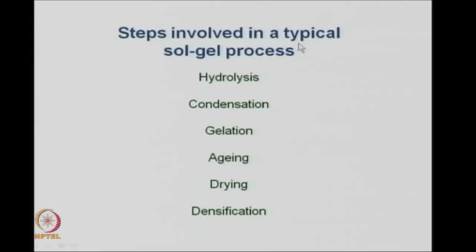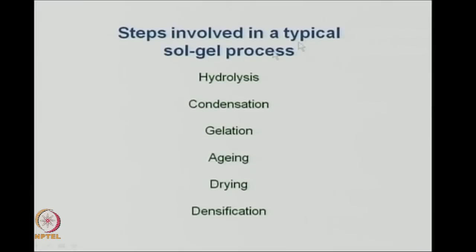The steps involved in a typical sol-gel process are: first the hydrolysis step, then the condensation step. After condensation you have gelation — you get the gel — and then the gel is allowed to age, meaning it is kept for some time during which some solvent may evaporate. After that you dry the gel and then densify it depending on your application. These are the key steps: hydrolysis, condensation, gelation, aging, drying, and densification to get a dense solid.